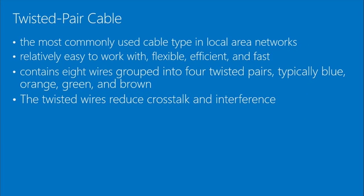Twisted pair cable is the most commonly used cable type in local area networks — relatively easy to work with, flexible, efficient, and fast. It contains eight wires grouped into four twisted pairs: blue, green, orange, and brown. The twisted wires reduce crosstalk, noise, and interference between the wires.